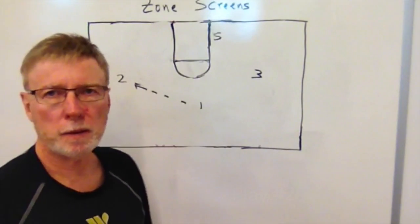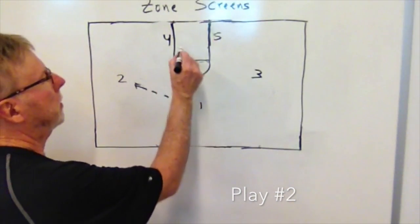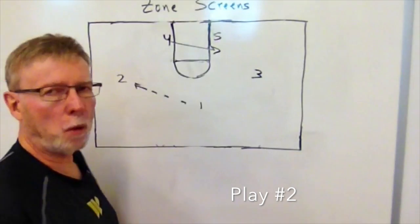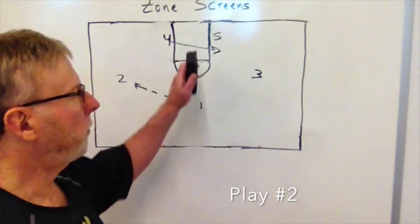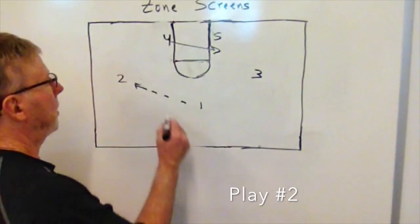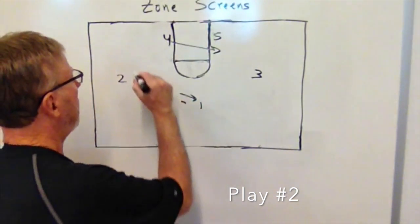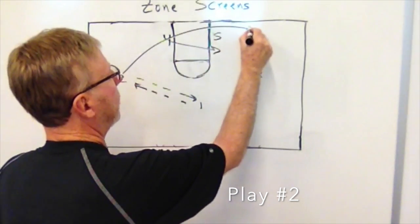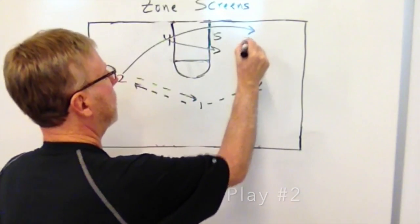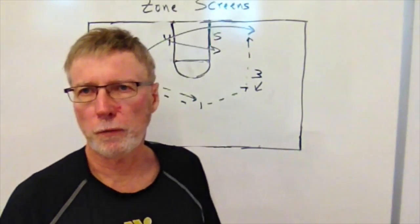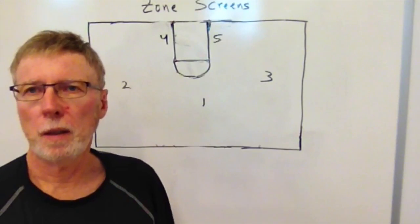Play number two again starts with a pass to the left to the two man. The four man breaks to the low block and creates a double screen with the five man. The two man passes back to the one and breaks around that double screen. The one man passes to the three, and the three passes it on to the two for the shot.